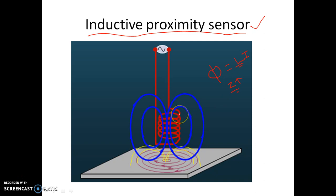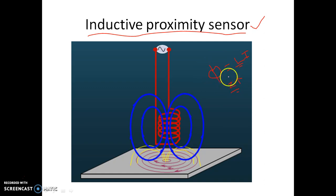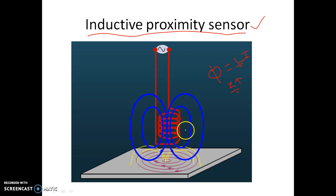Basically, the impedance offered by the coil will increase, which will be the input for the signal conditioning circuit. The increase in impedance value can be measured and calibrated such that from the change in impedance value, we can measure the distance of the metallic plate or sheet from the coil. If the distance between the metallic sheet and the coil is lesser, the opposing field created by the eddy current will be stronger, so phi decreases more and Z increases more. In this way, from the change in impedance Z, we can determine how close the metallic sheet is to the coil, and this eddy current sensor can act like a proximity sensor.